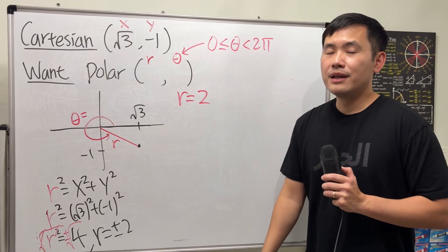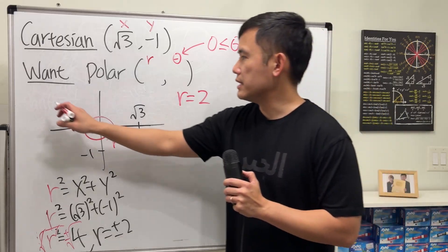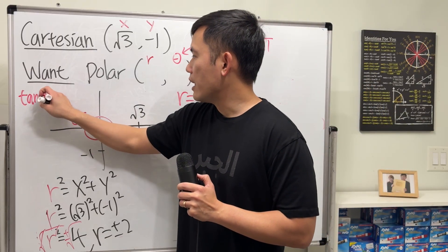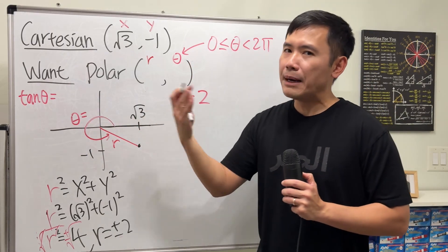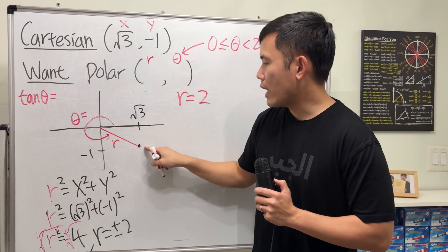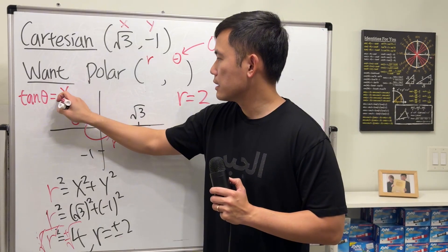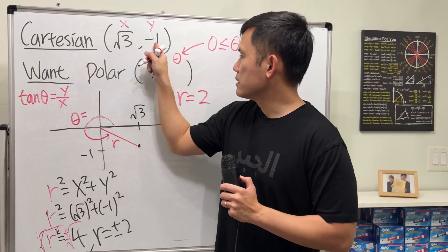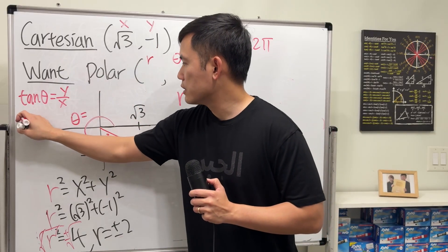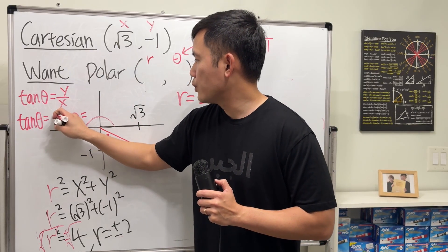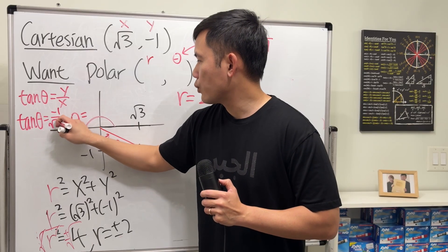Well, how do we find it? You can use the formula, which is this: tan θ = opposite over adjacent, which is y over x. And y is -1, x is √3. So tan θ = -1/√3.